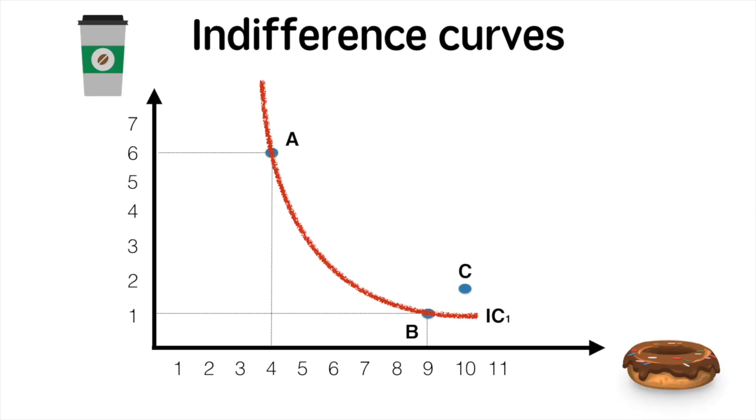Point C represents a combination that provides higher utility than points A and B. Therefore, there are an infinite set of combinations that would provide equal utility to point C. This is our new indifference curve, IC2, which represents higher total utility than IC1. We would prefer to be along IC2 as opposed to IC1.